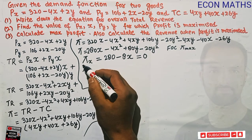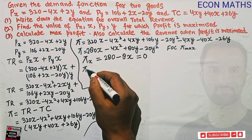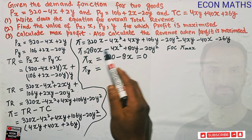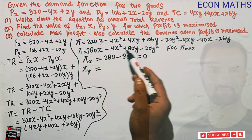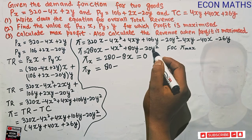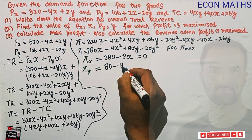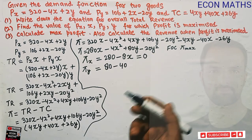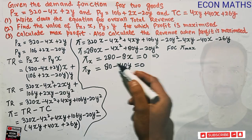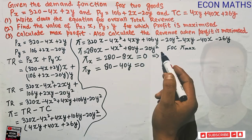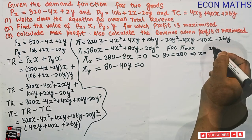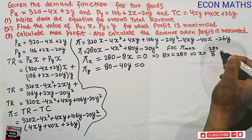The second first order condition requires ∂π/∂Y = 0. Differentiating with respect to Y gives 80 - 40Y = 0. Solving the first equation: 8X = 280, so X = 280/8 = 35. Solving the second: 40Y = 80, so Y = 80/40 = 2. The optimal values are X = 35 and Y = 2.